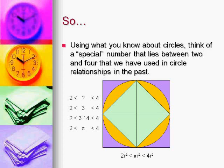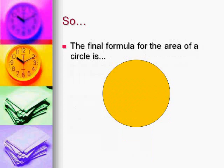That's where we get the formula for the area of a circle. The final formula is: a = πr².